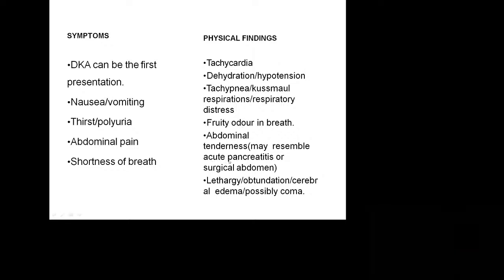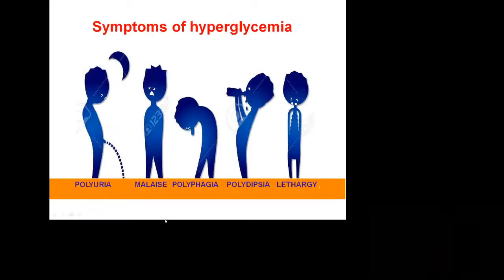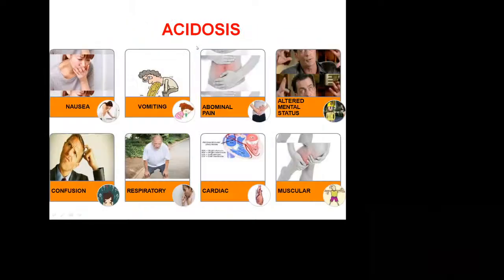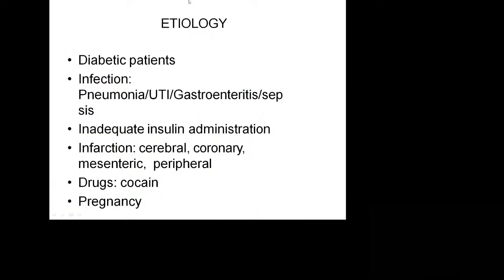It is very important to rule out acute pancreatitis, as it can be one of the causes of DKA. Lethargy, obtundation, cerebral edema causing problems, and the patient can land up in coma. Polyuria, malaise, polyphagia, polydipsia, and lethargy are all because of hyperglycemia. Tachycardia, hypotension, poor skin turgor, dry mucous membranes, and shrunken eyes are all because of volume depletion and dehydration. Acidosis causes nausea, vomiting, abdominal pain, altered mental status, muscular pains, cardiac problems, respiratory problems, tachypnea, and confusion.